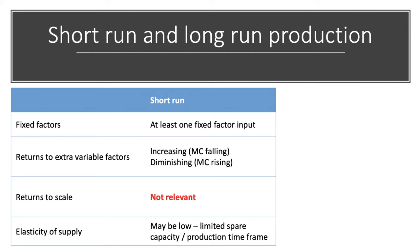Returns to scale are not relevant in the short term. When we think about elasticity of supply, that depends on the shape of the marginal cost curve for the firm. Elasticity of supply may be low because a firm may have limited spare factor inputs, limited spare capacity, or there could be a lengthy production timeframe — for example in the farming industry or in the construction sector.